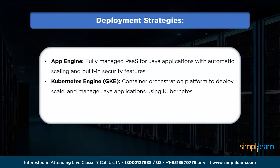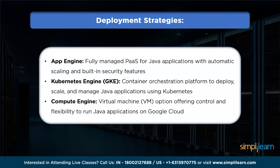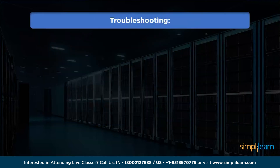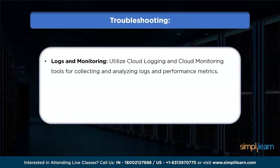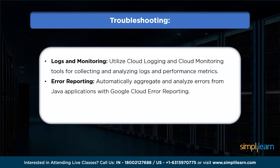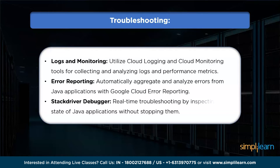For more control and flexibility, you can develop your Java application on Google Compute Engine, which provides virtual machines that you can install and configure according to your requirements. Now let's talk about troubleshooting. Google Cloud provides logging and monitoring tools like Cloud Logging and Cloud Monitoring, which you can use to collect and analyze logs, track performance metrics, and troubleshoot issues in your Java application. Next, Google Cloud Error Reporting automatically collects and aggregates errors from your Java application, providing insights into the root cause of errors to help you identify and fix issues quickly.